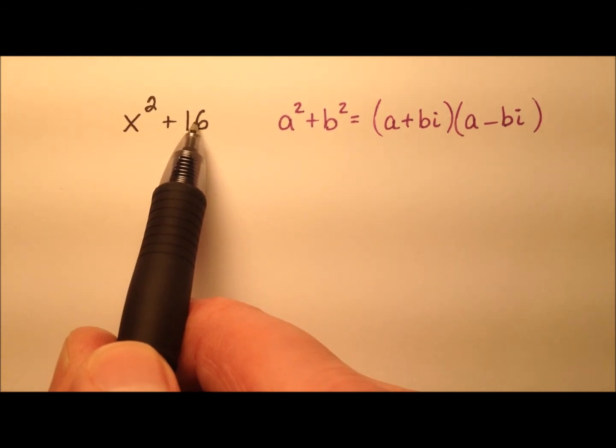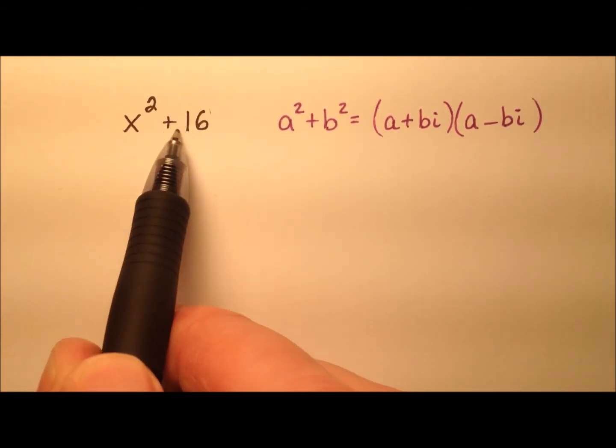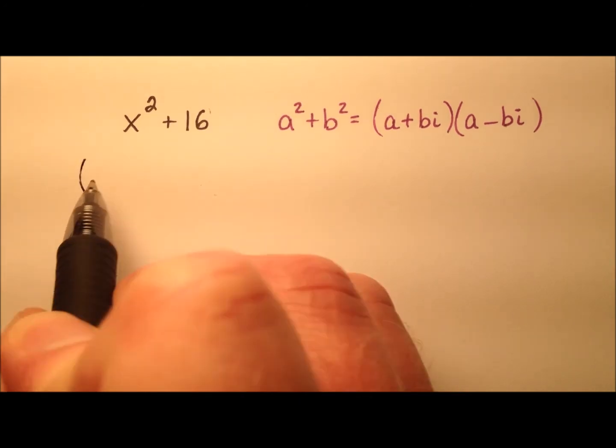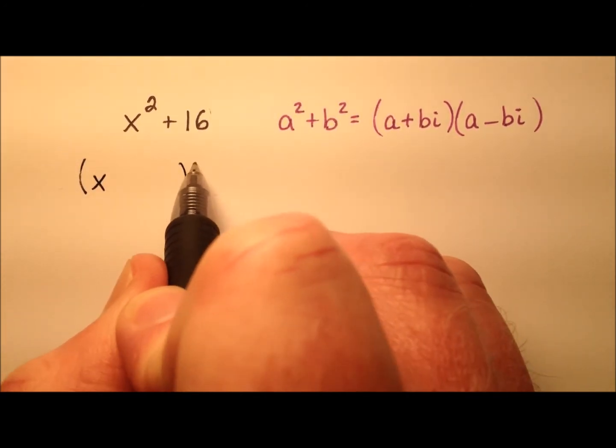So x squared plus 16, I need the square root of both terms, so I'll put those in parentheses. So the square root of x squared is x.